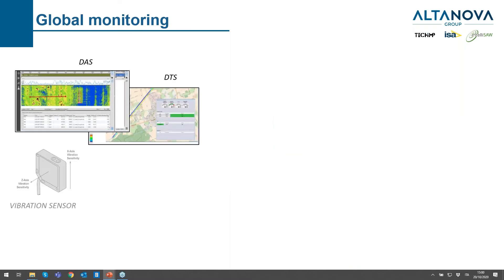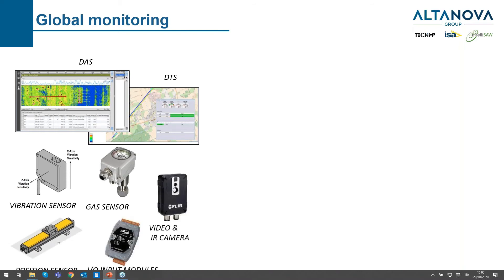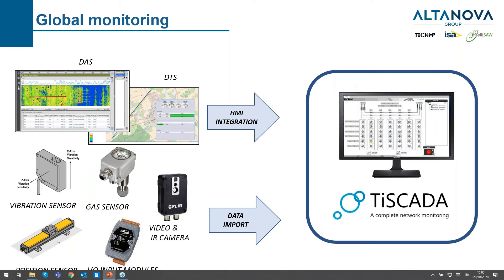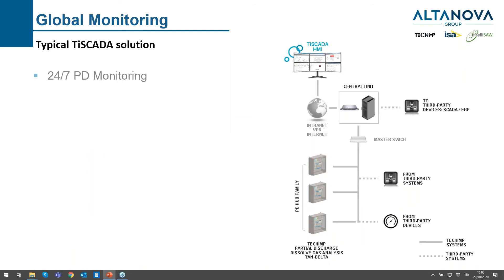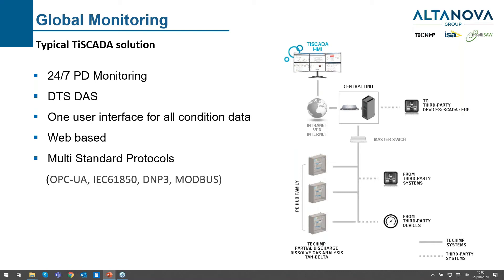We can include third-party sensors and manage other data together with the PD data. An example of HV cable global monitoring includes DTS, vibration sensors, gas sensors, video cameras, infrared sensors, position sensors, and input modules. We can do both HMI integration and data import. A typical example features 24/7 PD monitoring, DTS, and distributed strain in one user interface on a web-based platform, with multi-standard protocols available: OPC-UA, IEC 61850, DNP3, and Modbus.